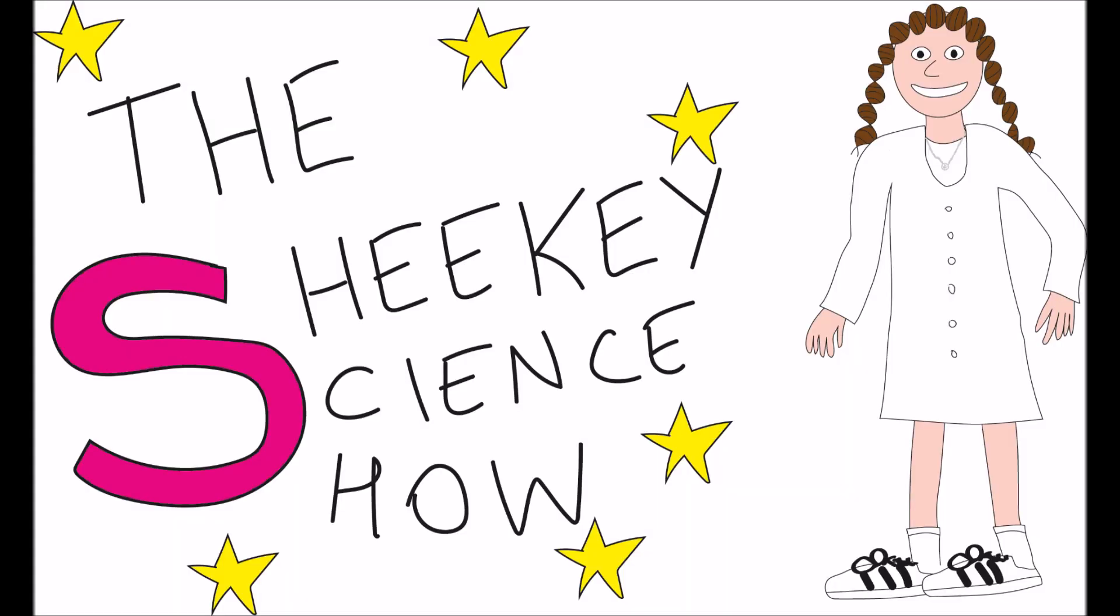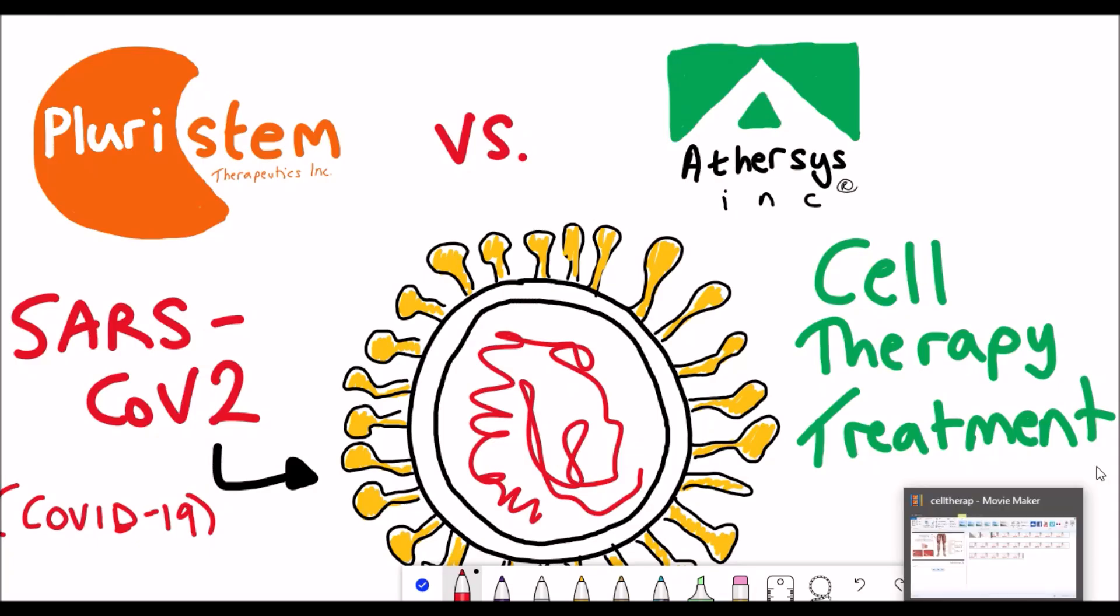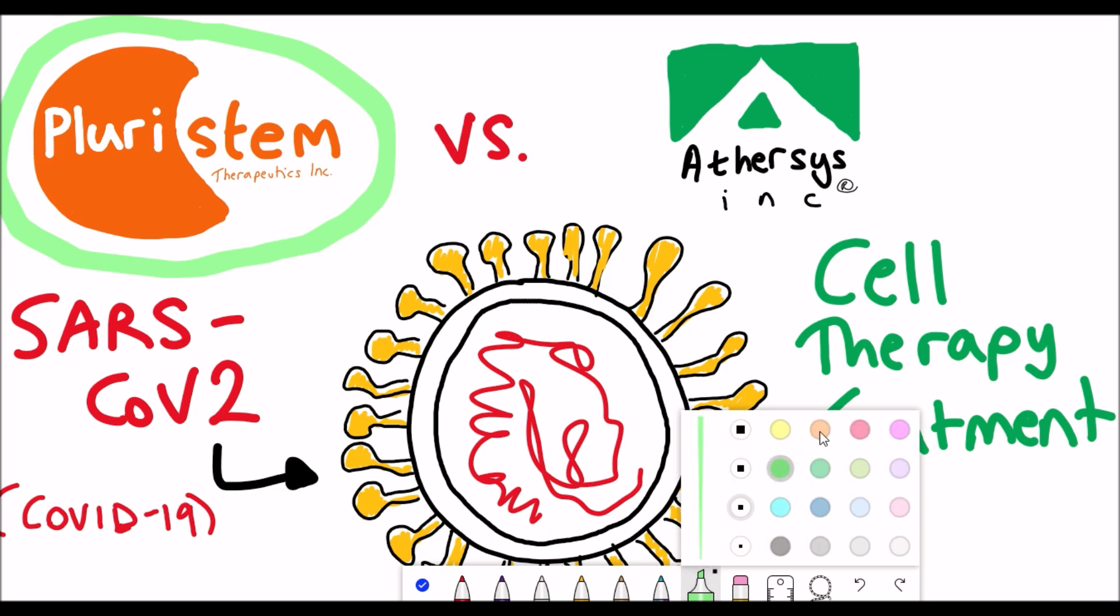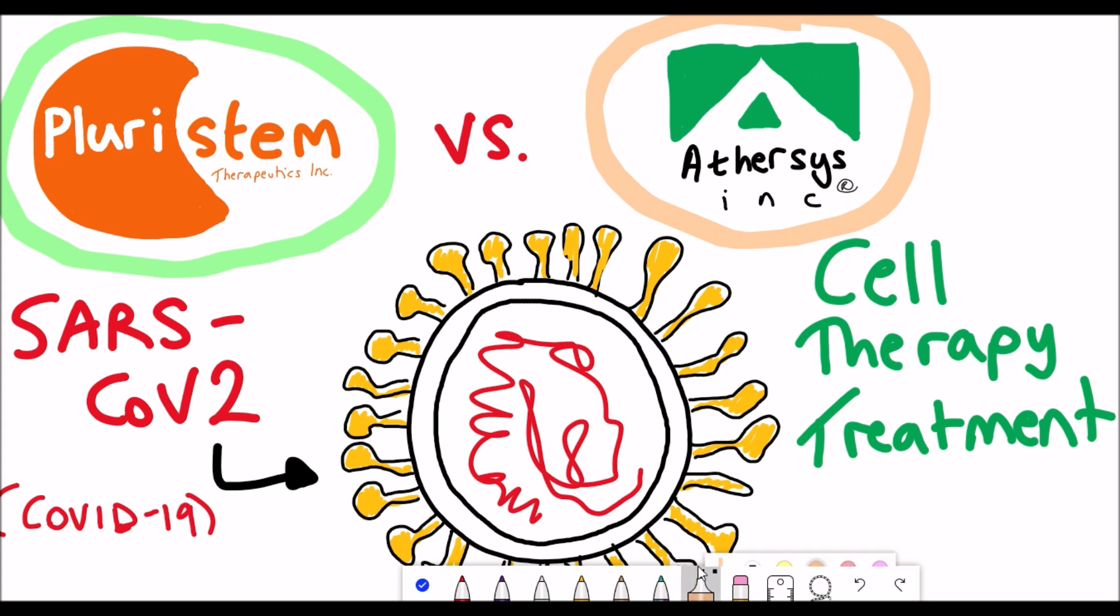Hello and welcome to the Shui Science Show. In this video I'm going to discuss new information about two different companies currently developing cell therapies for treatment for COVID-19. These two companies are Pluristem Therapeutics and Athersys. I recently watched a webinar produced by the Alliance for Regenerative Medicine with speakers from both companies. The video is available on YouTube but it's about an hour long, so I'll summarize the key points and take-home messages.